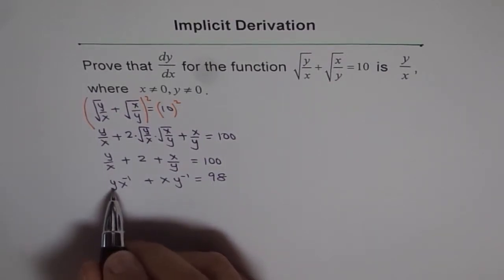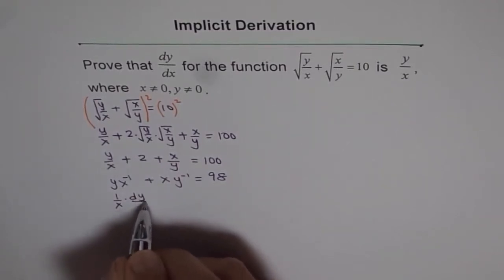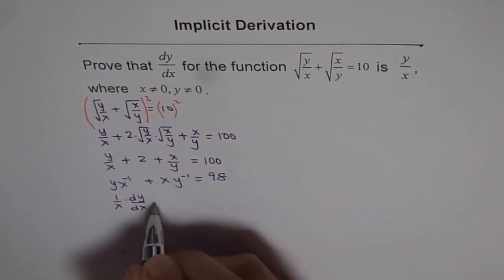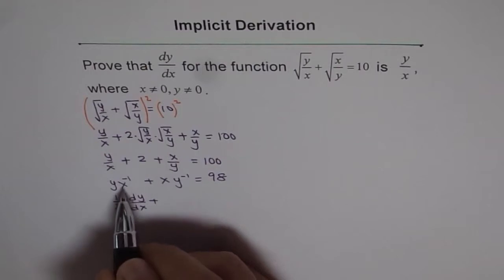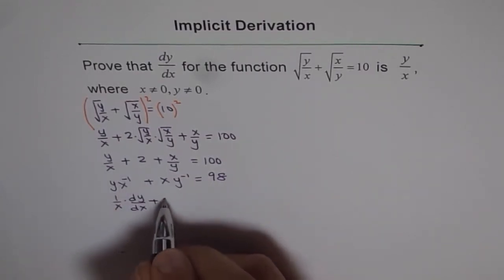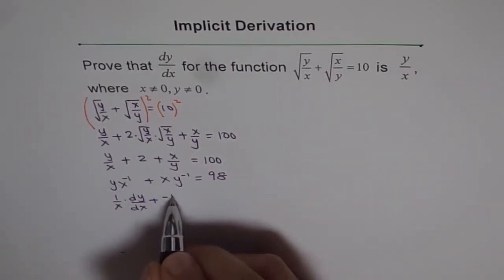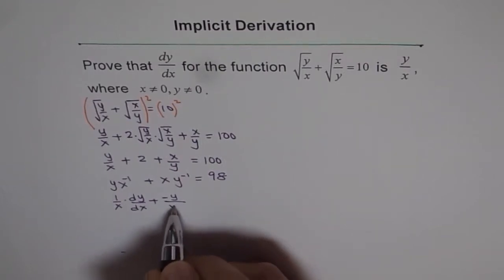Now, derivative of y, so we get dy/dx and 1/x. So it is (1/x)dy/dx, we are using product rule here, plus derivative of x⁻¹ is -x⁻². So we get -1 times y over x², so it is -y/x².